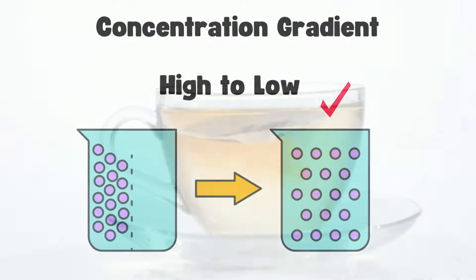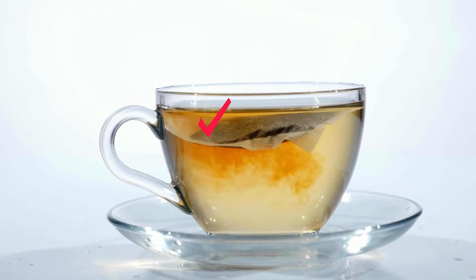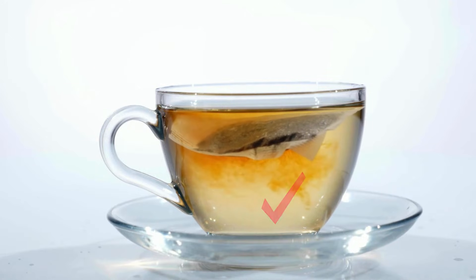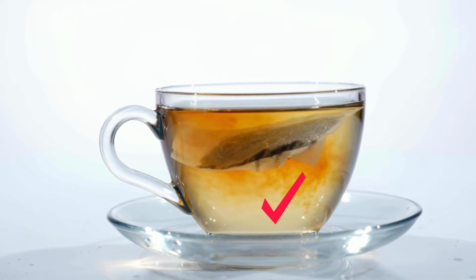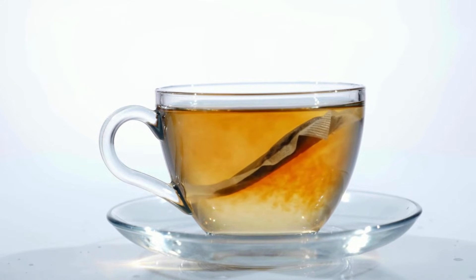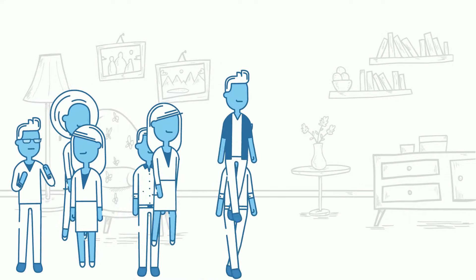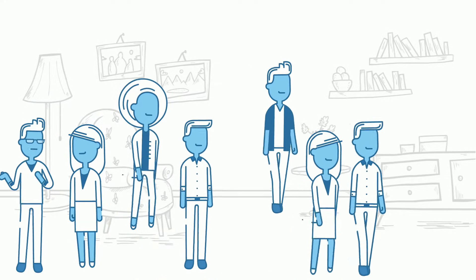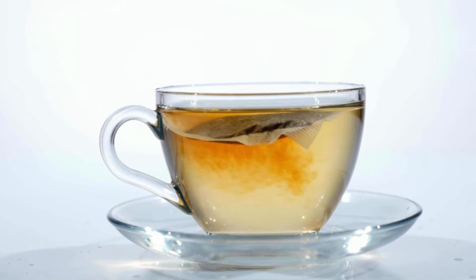In this teacup, we have a high concentration of tea molecules inside the bag and a low concentration outside. This difference creates a concentration gradient, and those tea molecules want to spread out. This movement from high concentration to low concentration is called diffusion — it's like those people moving from the crowded section of the room to the less crowded area. The tea molecules diffuse out of the bag until they're spread out evenly in the water.